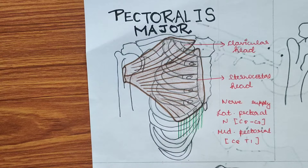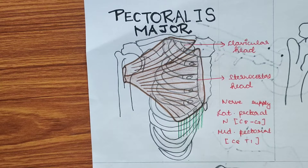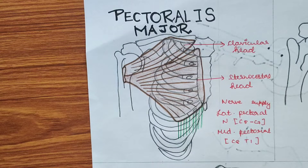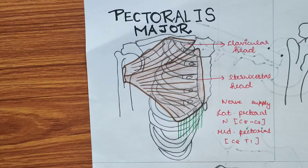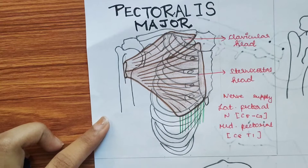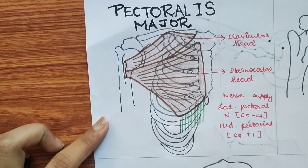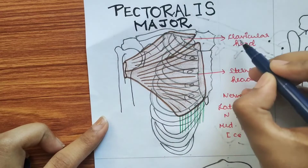Today we are studying about pectoralis major — its origin, insertion, nerve supply, actions, and applied anatomy. It has two heads: clavicular head and sternocostal head. The clavicular head originates from the medial half of the clavicle, specifically its anterior aspect.